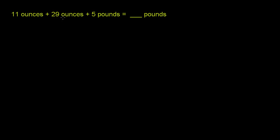We have 11 ounces plus 29 ounces plus 5 pounds equals how many pounds? So we need to add these three quantities. They want us to give the answer in pounds, and we can only add quantities that have the same unit.